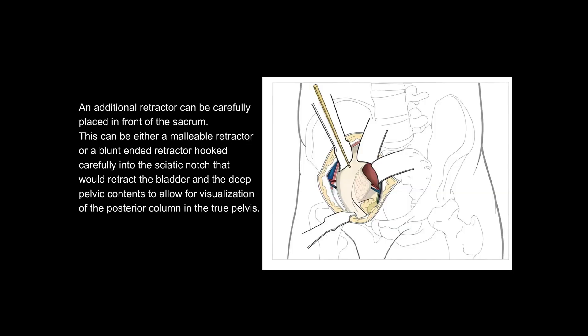An additional retractor can be placed in front of the sacrum. This can be either a malleable retractor or a blunt-ended retractor hooked carefully into the sciatic notch that would retract the bladder and the deep pelvic contents to allow for visualization of the posterior column in the true pelvis.